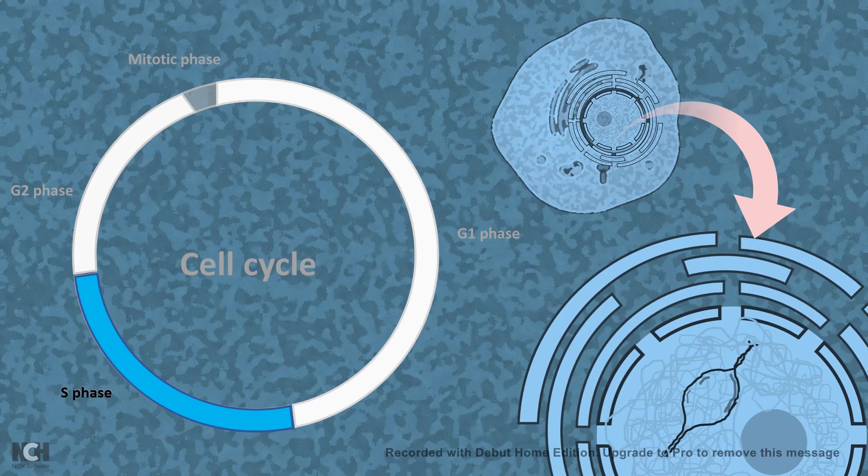But have you ever imagined that in this one cell cycle time, why the replication does not take place twice? Or let's say one round of replication, after that, why does another round of replication not take place?